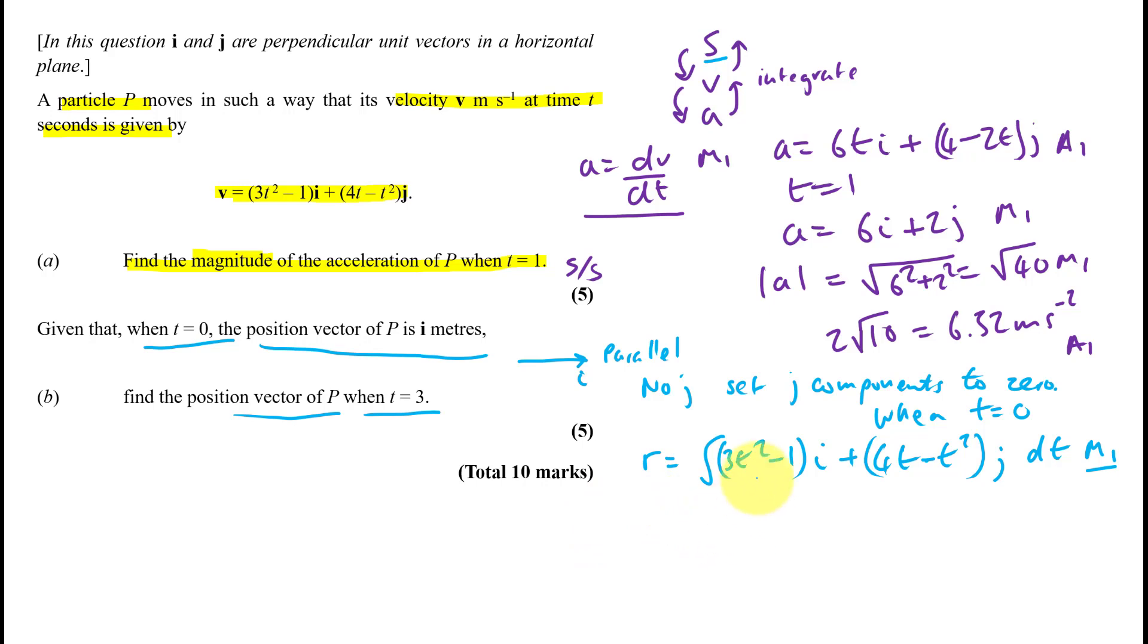So some of us are getting this step wrong. Raised by the new power, divided by the power. So that's t cubed minus t. Remember we're integrating, so we need our plus c. Can't get full marks without remembering that. Plus c. i plus t squared over 2, because you increase the power by 1, divide by the new power. Minus t cubed over 3. And I've closed the bracket too early, because I want to just keep this clean.